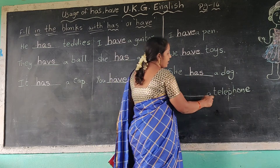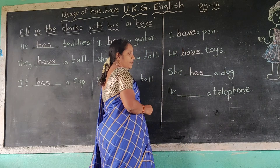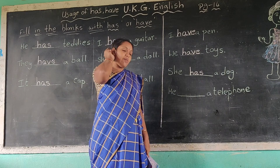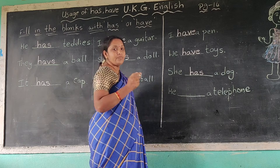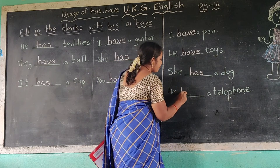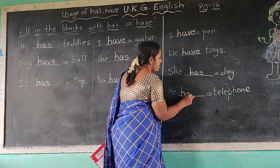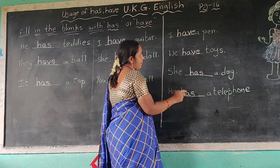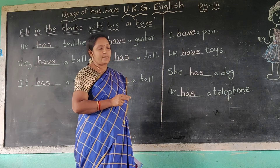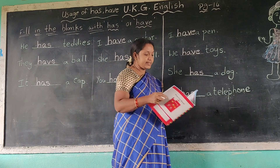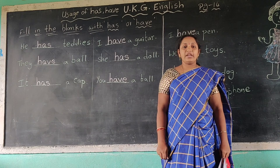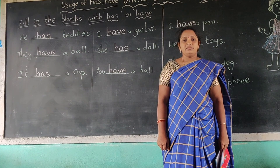Next one: he dash a telephone. He — has or have? He uses has. He, she, it — has. Write here, has, H-A-S. He has a telephone. Okay children, like this you have to fill page number 14 in your P-book. Thank you children. Bye, thank you.